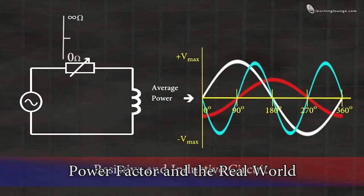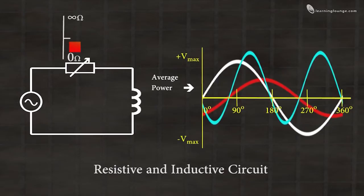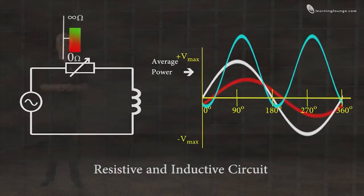As the resistance increases, this causes the lag between the current and voltage to reduce until the point where the resistance is so high it swamps the impedance.